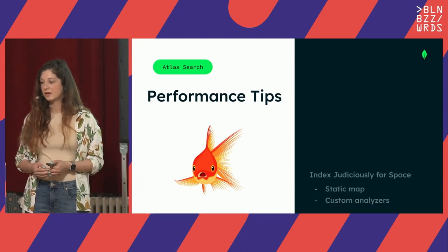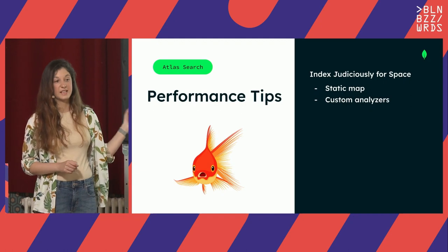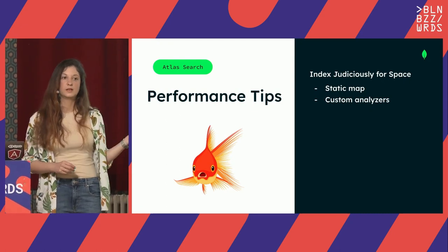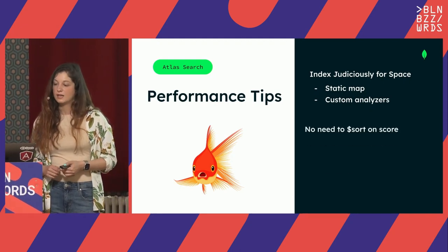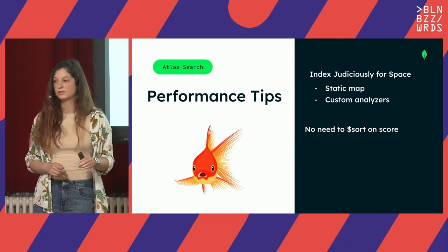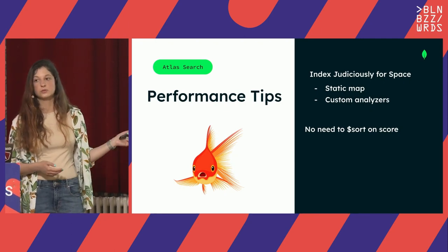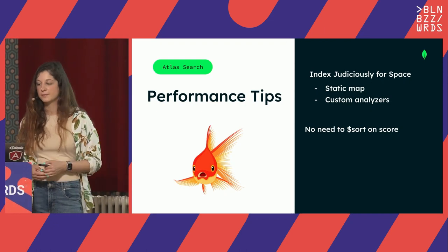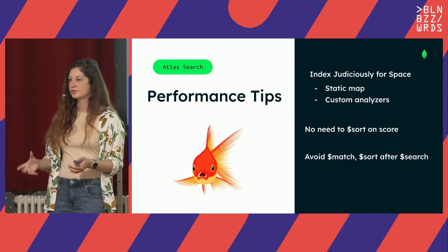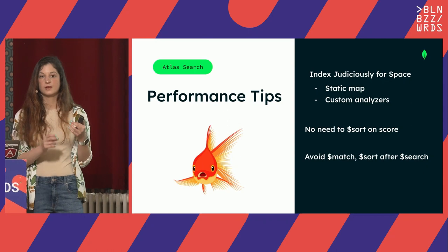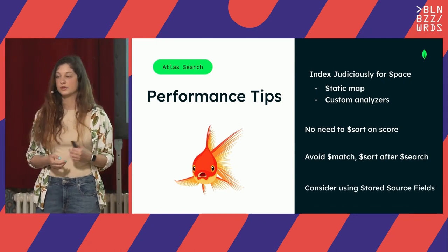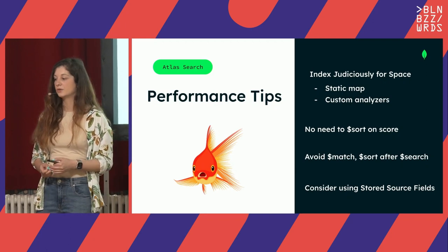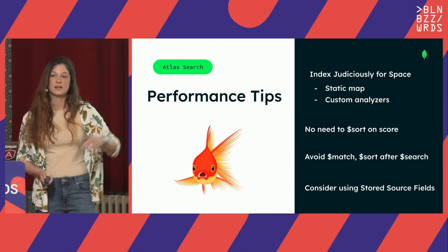Now a couple of performance tips. First, don't use dynamic mappings where possible — use your own field mappings. You can improve your index space using custom analyzers. The second thing is don't use `$sort` — this is a sorting stage you can use in MongoDB, but it doesn't make sense in Atlas because your results are already sorted based on their relevance score. Optimize the relevance score instead of using sort. If you need to use match or sort for some reason, you can use stored source fields — these fields will be indexed together with your search index, allowing you to use match or sort in a much more optimized way instead of scanning the whole dataset.